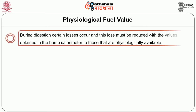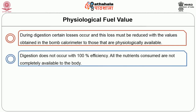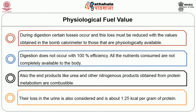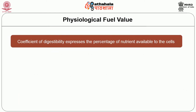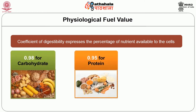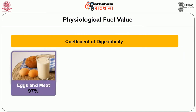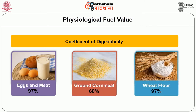Physiological fuel value: During digestion, certain losses occur and must be accounted for when converting bomb calorimeter values to those that are physiologically available. Digestion does not occur with 100% efficiency; all nutrients consumed are not completely available to the body. End products like urea and nitrogenous products from protein metabolism are combustible, and their loss in urine is about 1.25 kilocalories per gram of protein. The coefficient of digestibility is 0.98 for carbohydrate, 0.95 for protein, and 0.92 for fat. For milk, egg and meat it is 97%, ground corn meal 60%, and whole wheat flour 97%.